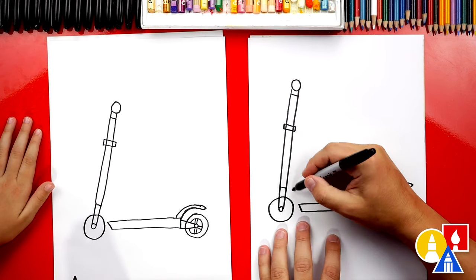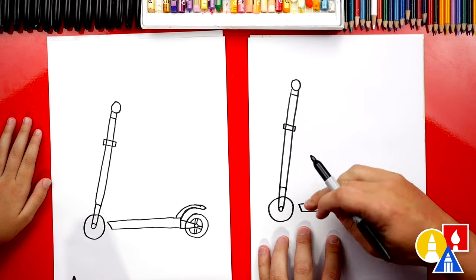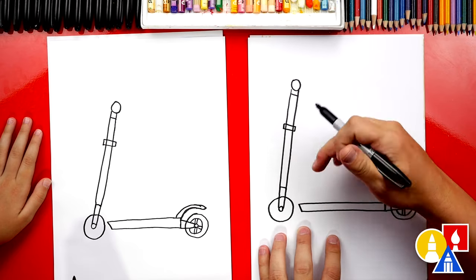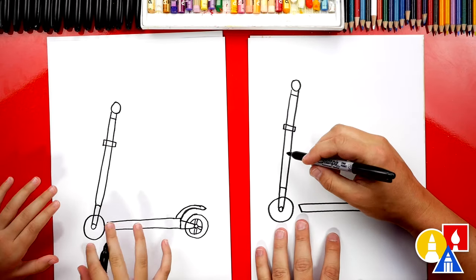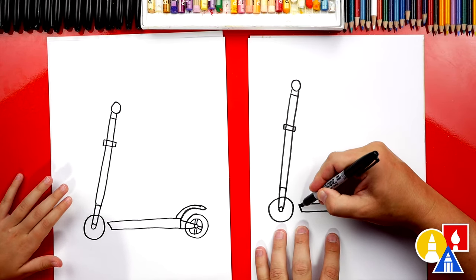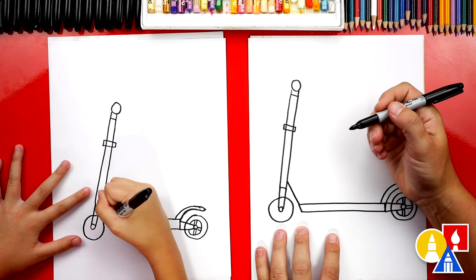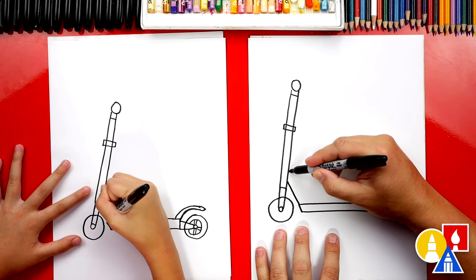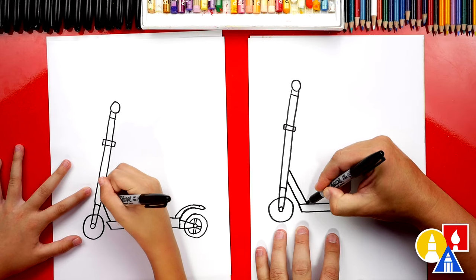Then we're gonna come down here and we're gonna draw the brace that connects the step part to the steering column. I'm not sure what all the names are. It's not just a wheel and a stick. So let's start here and we'll draw a diagonal line that comes up and then we're gonna draw another diagonal line that comes down right next to it.